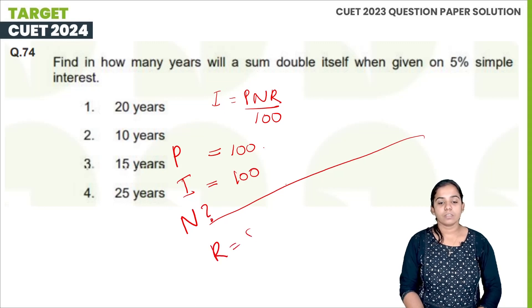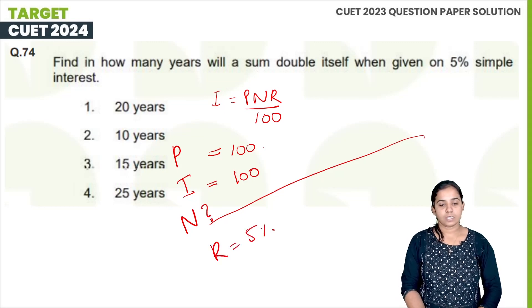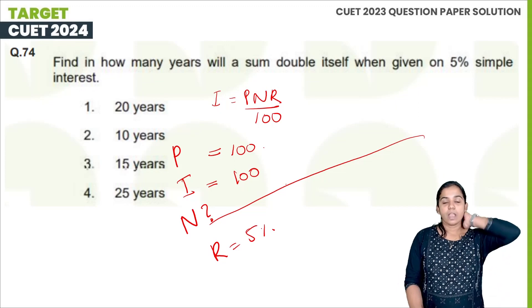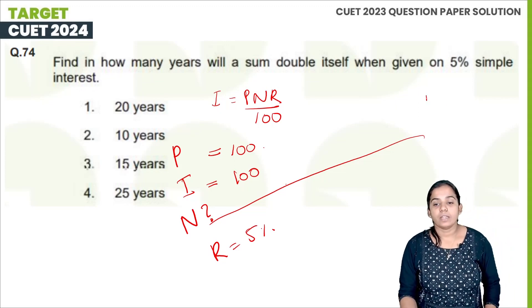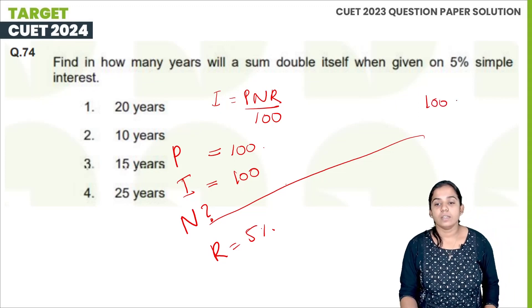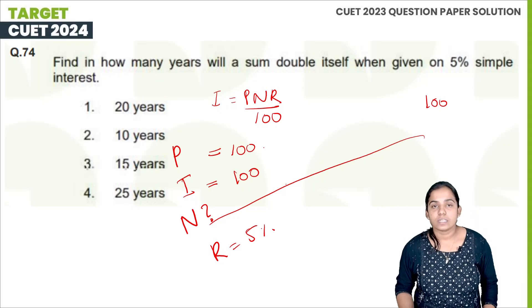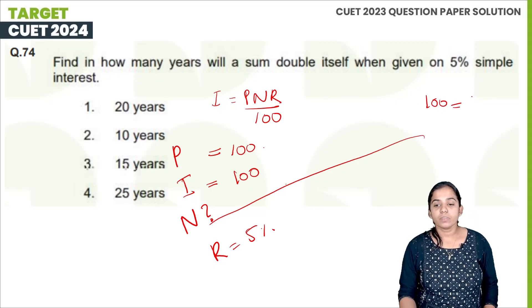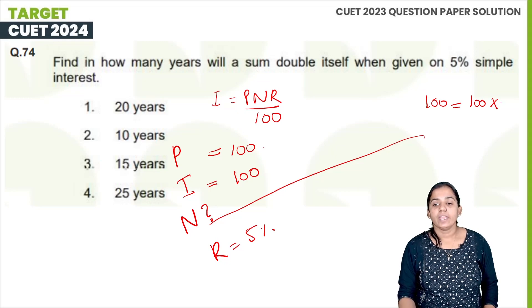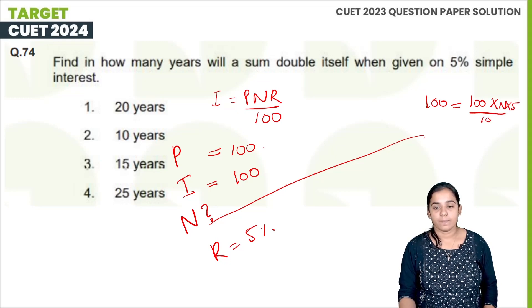There is a 5% rate. So the interest is 100 rupees, P is 100 rupees, and R is 5%.